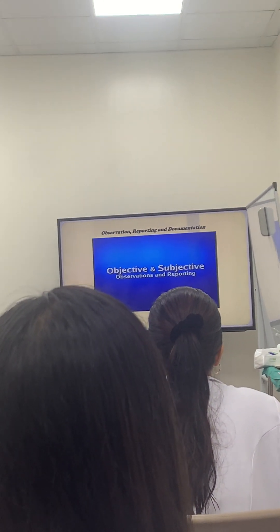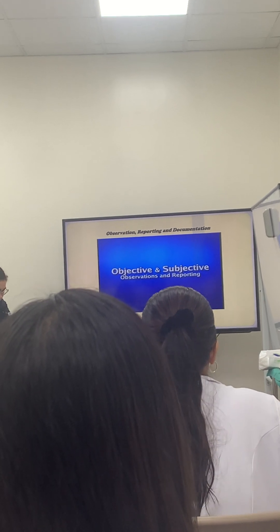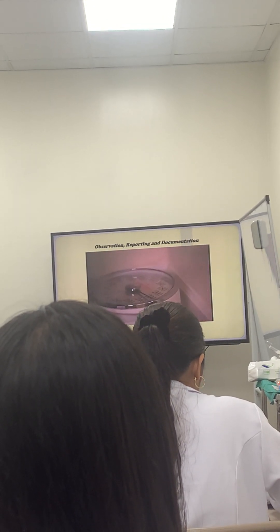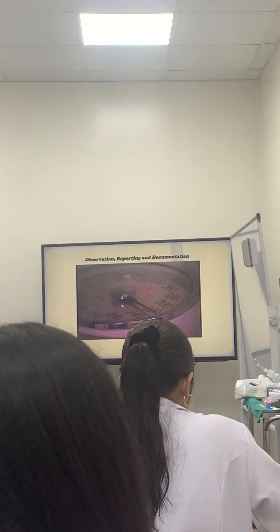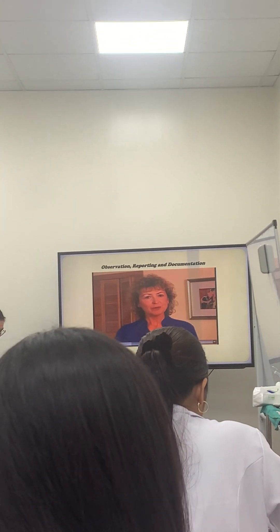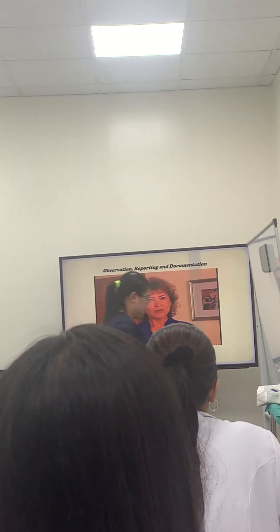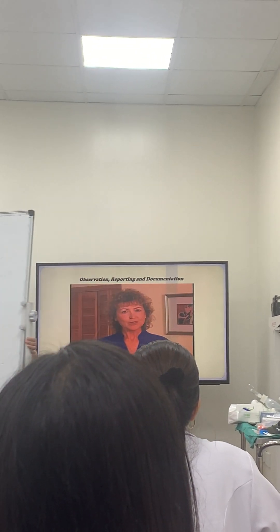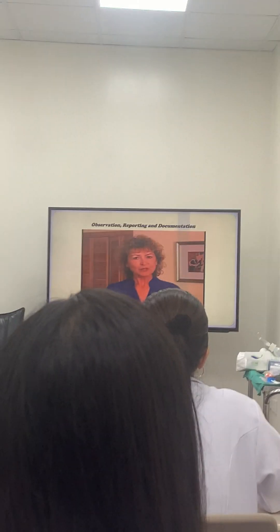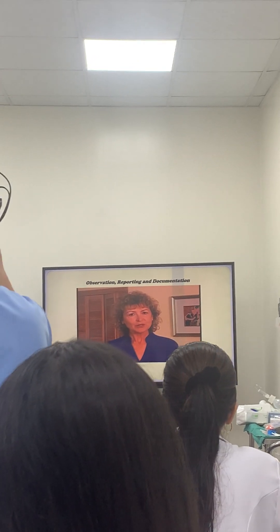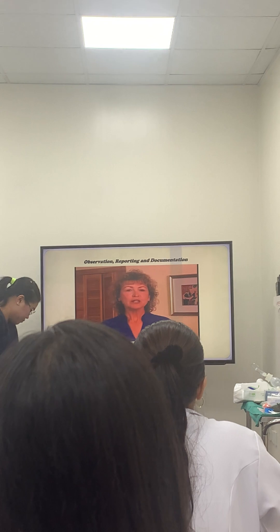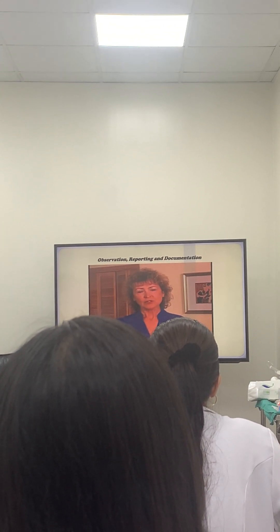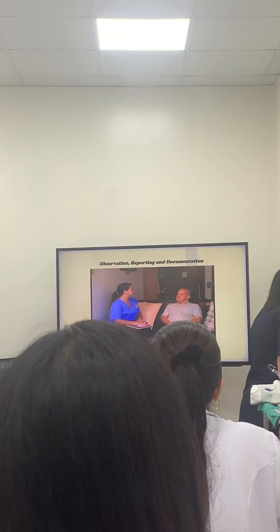There are two types of observations: objective and subjective. Objective observation is factual or measurable. For example, Mrs. Kanye's weight is 200 pounds. Subjective observation is based on personal experience, opinion, or what your client or family member tells you. It may or may not be factual. If your client tells you, 'I think I've lost weight,' that is a subjective comment because it is not based on measurable fact.